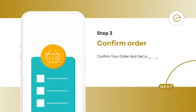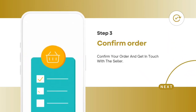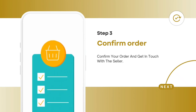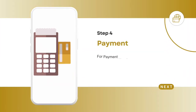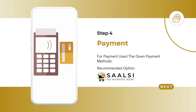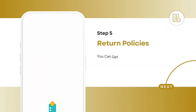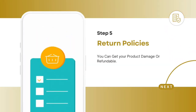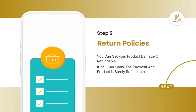Step 3: confirm order — confirm your order and get in touch with the seller. Step 4: payment — for payment, use the given payment methods. Recommended option: cancel. Step 5: return policies — you can get your product refunded if damaged.